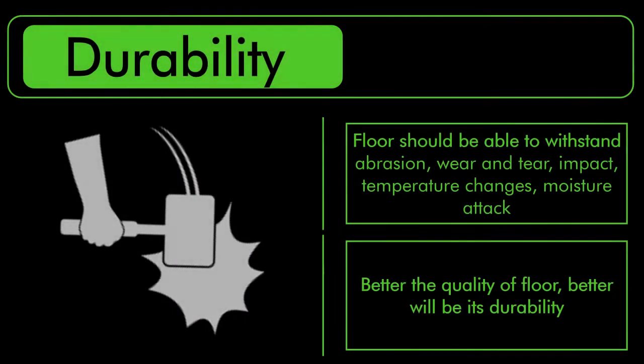The next parameter is durability. The floor should have good resistance against abrasion, wear and tear, impact, temperature changes, and moisture attack. It should withstand all deteriorating forces for a long period of time. Superior the floor cover, better its durability. For example, marble, terrazzo, and concrete have very great durability compared to brick, mud, or mooram flooring.